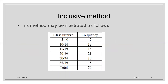For the inclusive method, the class interval and frequency are given. For example, 5 to 9 — if we have ungrouped data and we are going to group it into a class, all values from 5 to 9 will come under this class interval, so there are 7 frequencies. And 10 to 14 — starting from 10 and ending at 14, all the values will belong in this interval, which has 12 frequencies. 15 to 19, 30 to 34 with 10 frequencies, 35 to 39 with 5 frequencies, and so on. This is the example of the inclusive class interval.